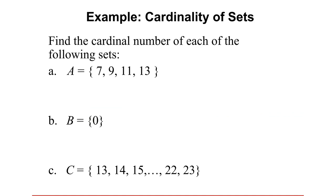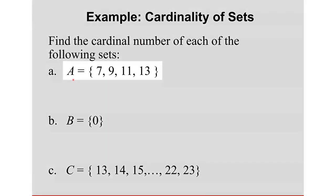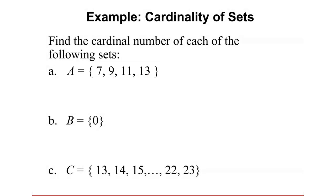Find the cardinal number of each of the following sets. When you say cardinal number, you are going to count the number of distinct elements. What's the cardinal of A? How many distinct elements do you see here? 4. So the cardinal of A, N of A, is equal to 4.